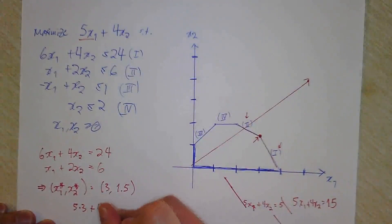So we've now fully solved this linear program with two variables.